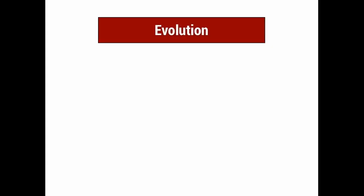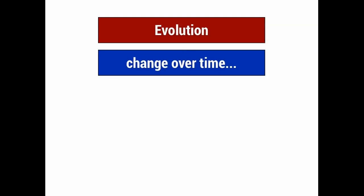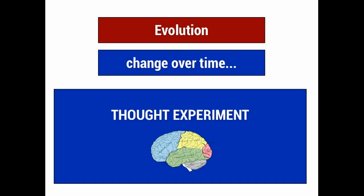Remember that evolution means change over time, so we're looking at things that have changed over time. We're going to look at things that have changed naturally over time, and things that have changed artificially, or changed because of humans. In order to look at these two things, we're going to do a little thought experiment.